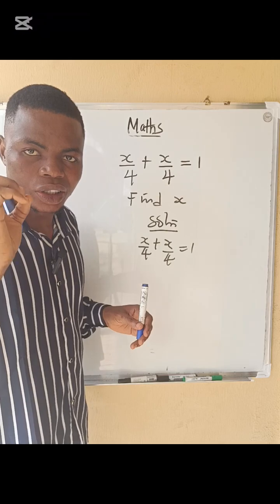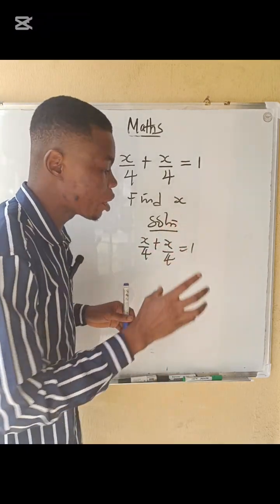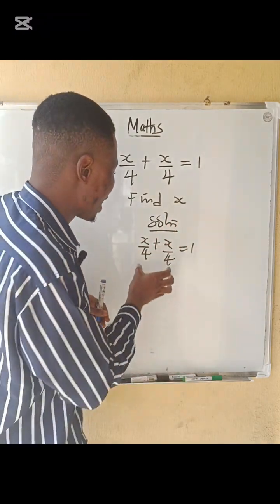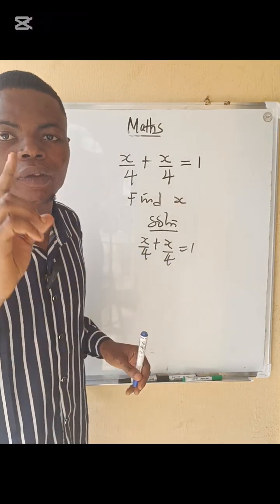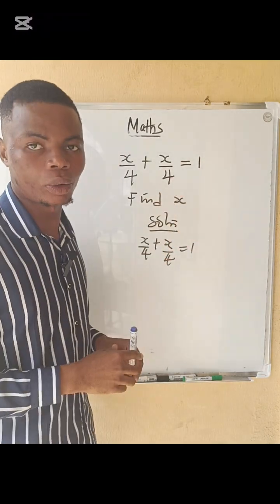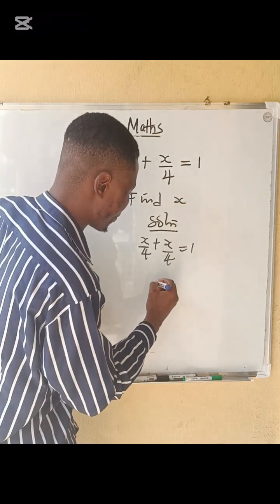Let me show you one thing you have to know here. Whenever you add two fractions and the two fractions have the same denominator, just pick one of the denominators and add the numerators. So this one and this is 4, so I pick 4.